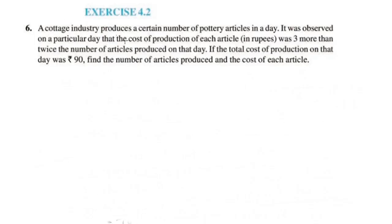A factory produces a certain number of articles in a day. It was observed on a particular day that the cost of production of each article was 3 more than twice the number of articles produced on that day. If the total cost of production on that day was Rs. 90, find the number of articles produced and the cost of each article.